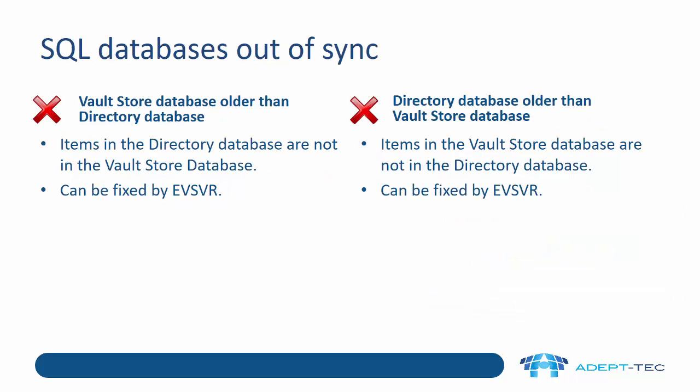Let's now think about the SQL databases. If the Vault Store database is older than the directory database, then obviously items in the directory database don't have corresponding entries in the Vault Store database. This could lead to users getting strange behaviour within Outlook, and it can be fixed using EVSVR. If the other way around — the directory database is older than the Vault Store database, i.e. there are items in the Vault Store database that are not in the directory database — once again we can get strange behaviour, but this can be fixed by EVSVR.